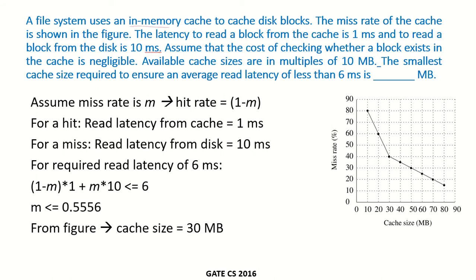A file system uses an in-memory cache to cache the disk blocks. The miss rate of the cache is shown in the figure, which gives the miss rate against the cache size. The latency to read a block from the cache is 1 ms and to read a block from the disk is 10 ms. Assume the cost of checking whether a block exists in the cache is negligible. Cache sizes are available in multiples of 10 MB, and we need to find the smallest cache size that ensures an average read latency of less than 6 ms.